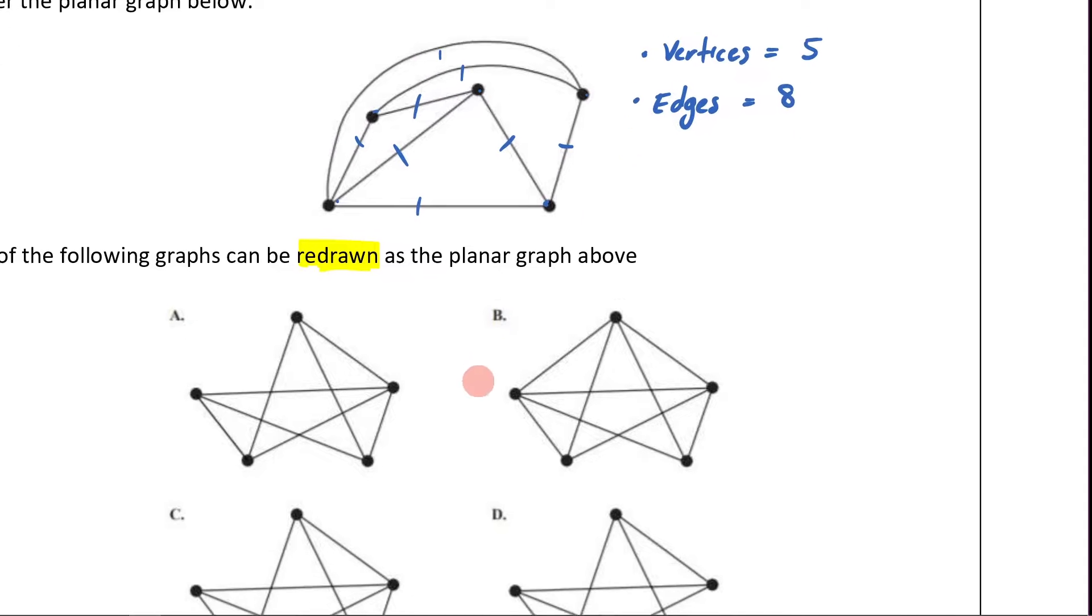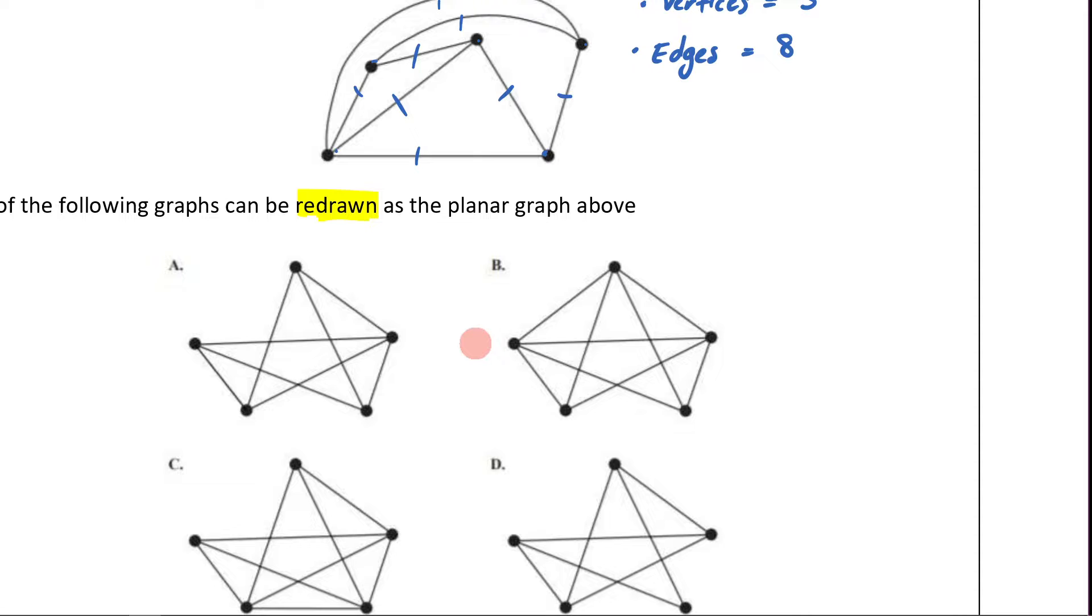So let's see how many edges each of these has. So here we have 1, 2... count it this way. 1, 2, 3, 4, 5, 6, 7, 8. So this could potentially be right because this is 8 edges.